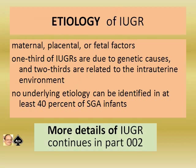Regarding the etiology of IUGR: maternal, placental, or fetal factors are the three main important components. One third of IUGR cases are due to genetic causes and two thirds are related to the intrauterine environment. No underlying etiology can be identified in at least 40% of SGA infants.